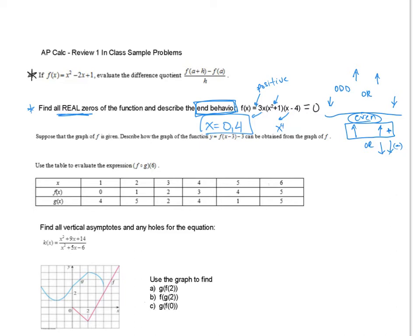We can describe the end behavior as: as x goes to positive infinity, f(x) — our y — also goes to positive infinity. And as x goes to negative infinity, f(x) also goes to positive infinity — it goes up as well. So as the graph goes left toward negative infinity the y values go up, and as it goes right toward positive infinity the y values also go up. That's why we look at those arrowheads.